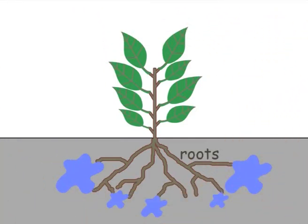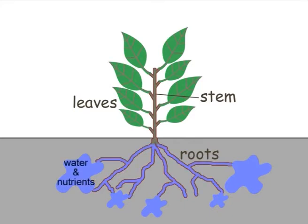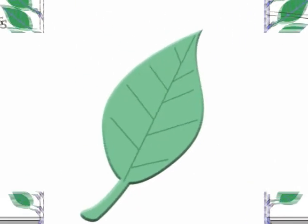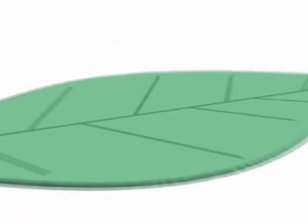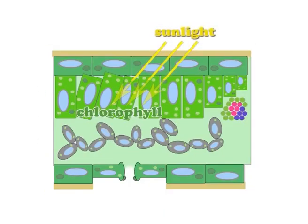A plant has roots, a stem and leaves. The roots absorb water and nutrients, while the stem holds the leaves up to the sunlight. The leaves contain chlorophyll to capture sunlight and tiny holes to absorb air.